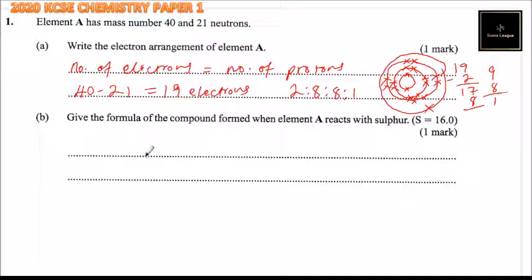We look at part B: Give the formula of the compound formed when element A reacts with sulfur.